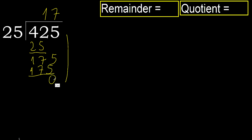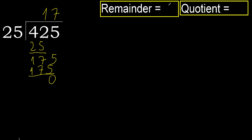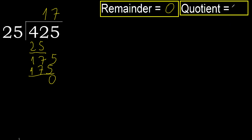Next: there is no more number, therefore finish. 425 divided by 25 is 17.